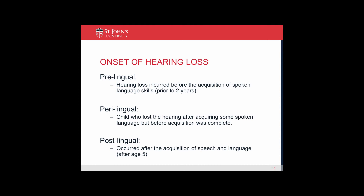The onset of hearing loss includes prelingual, which is a hearing loss incurred before the acquisition of spoken language prior to two years; perilingual, which is a child who lost hearing after acquiring some spoken language but before acquisition was complete; or postlingual, which occurs after the acquisition of speech and language.